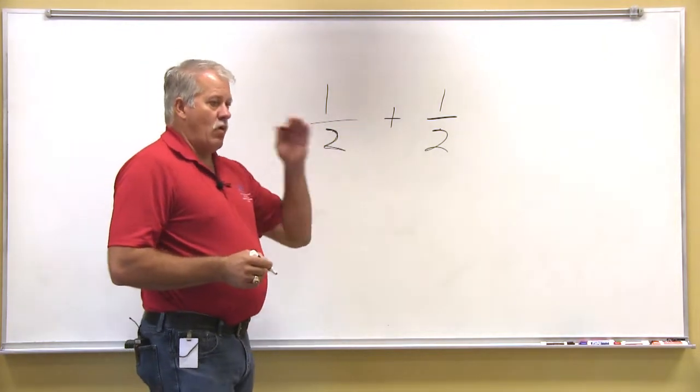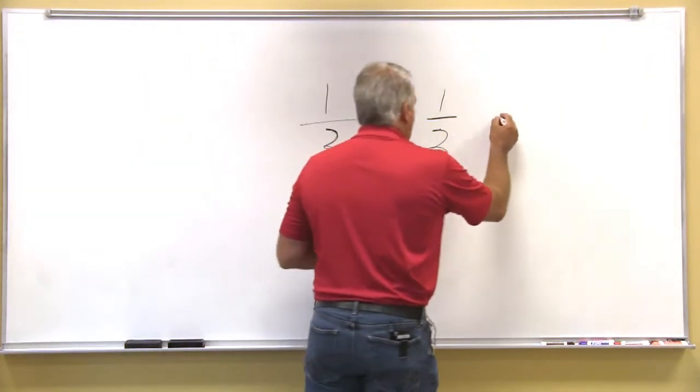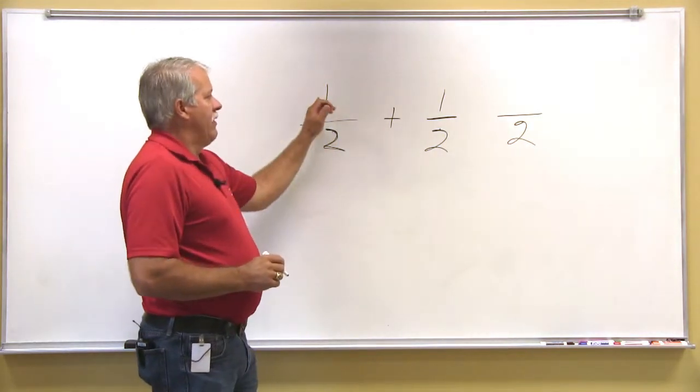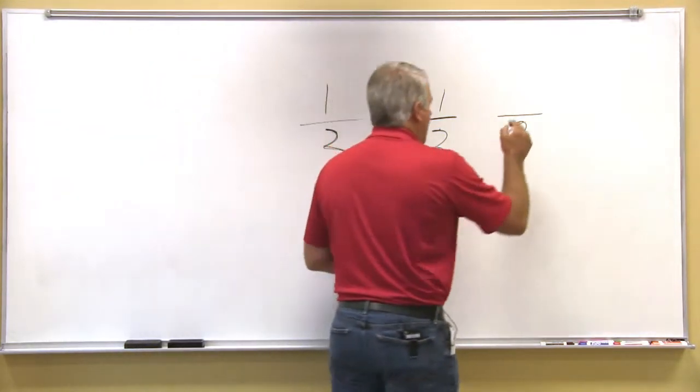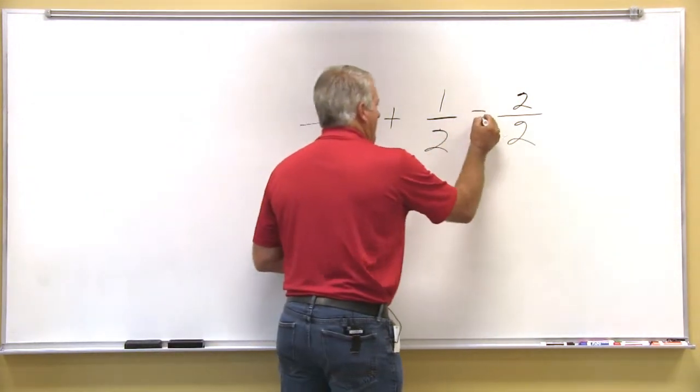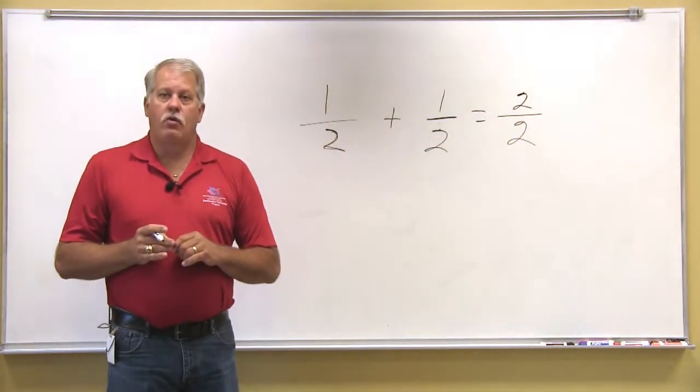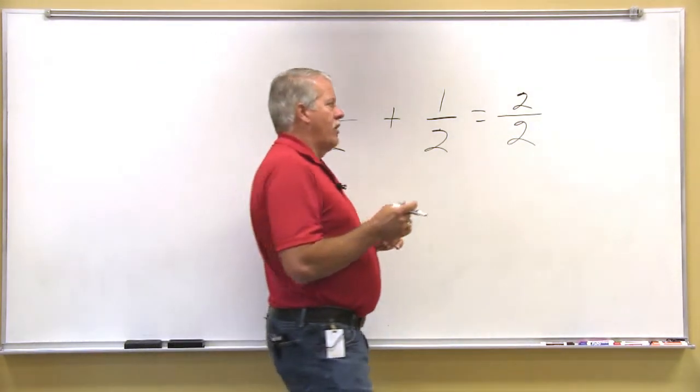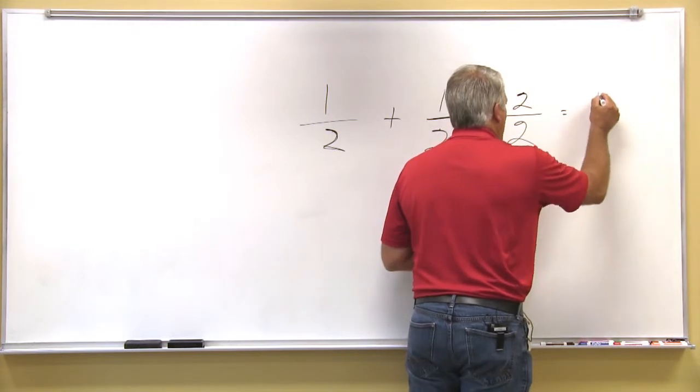So 1 half plus 1 half, the bottom number will not change, which is the denominator, and the two top numbers are added together. So 1 half plus 1 half is equal to 2 over 2, which is an improper fraction, which when you reduce it, is equal to 1.